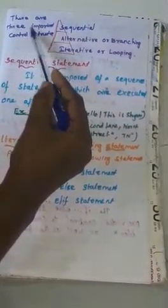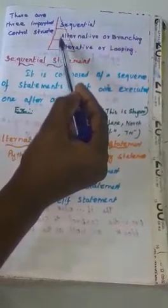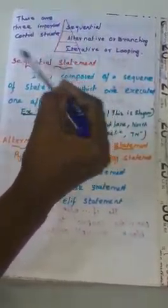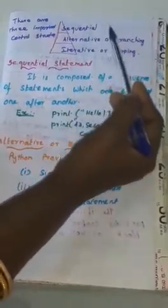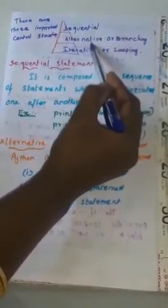There are three important control structures in Python programming. First: sequential statement. Second: alternative or branching. Third: iterative or looping.